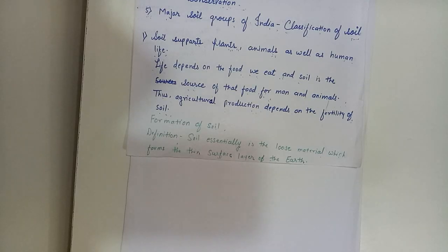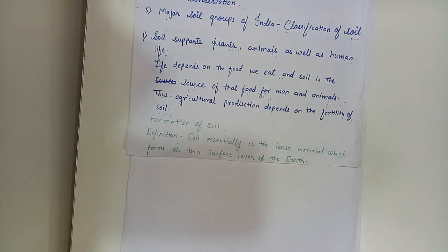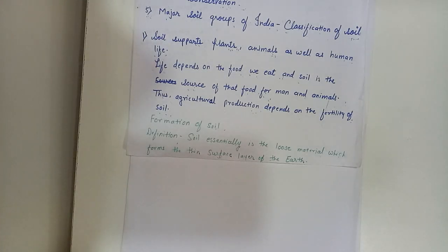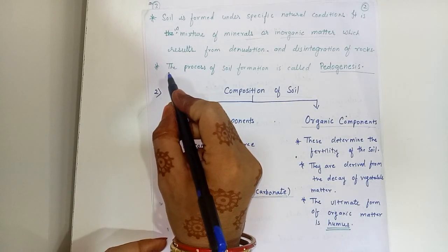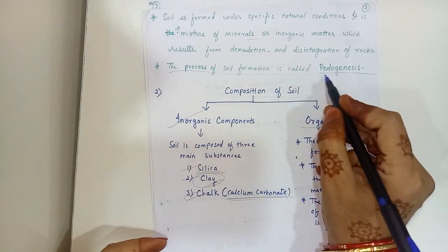Soil is formed under specific natural conditions. It is a mixture of minerals or inorganic matter which results from denudation and disintegration of rocks. Thus soil is a renewable natural resource, though it takes a long time to regenerate — it is a very time-consuming process. The process of soil formation is called pedogenesis.